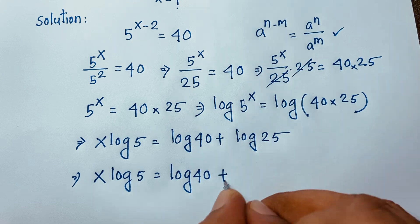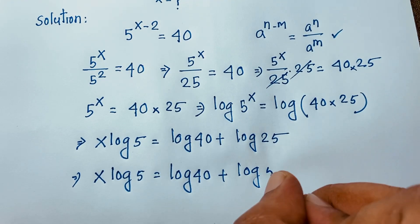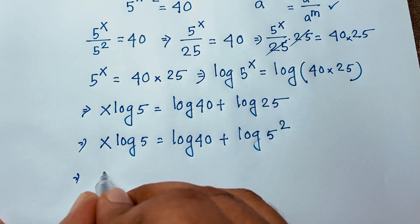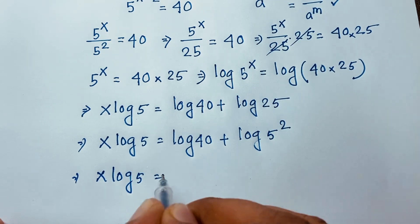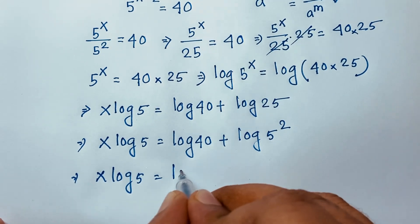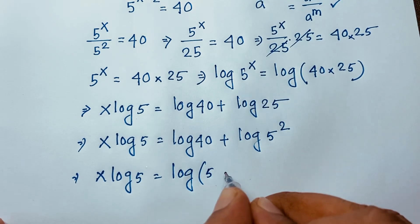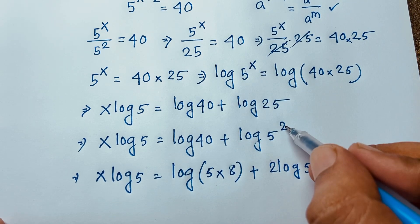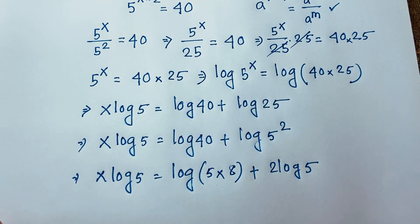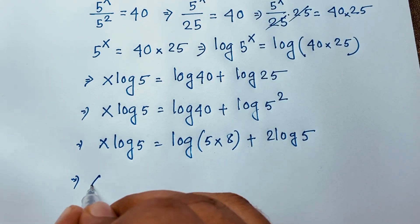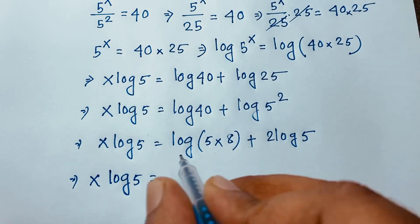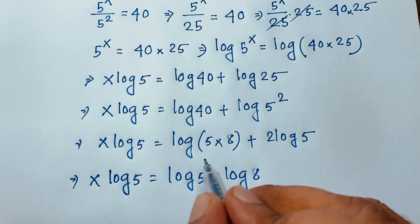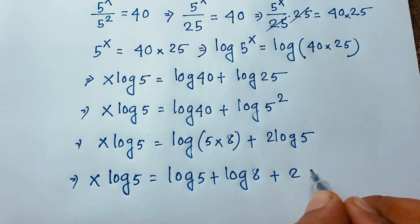Now log 25 equals log of 5 to the power 2, which gives 2 log 5. And log 40 can be written as log(5 × 8), which equals log 5 plus log 8. So x log 5 equals log 5 plus log 8 plus 2 log 5.